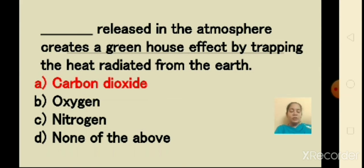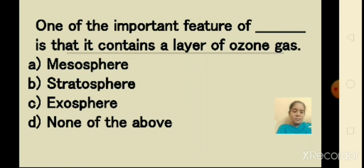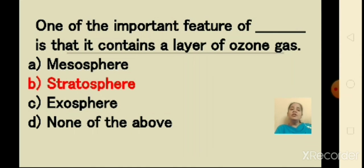The second question: one of the important features of which layer is that it contains a layer of ozone gas? The options are: A) mesosphere, B) stratosphere, C) exosphere, D) none of the above. The answer is stratosphere. One of the important features of stratosphere is that it contains a layer of ozone gas.